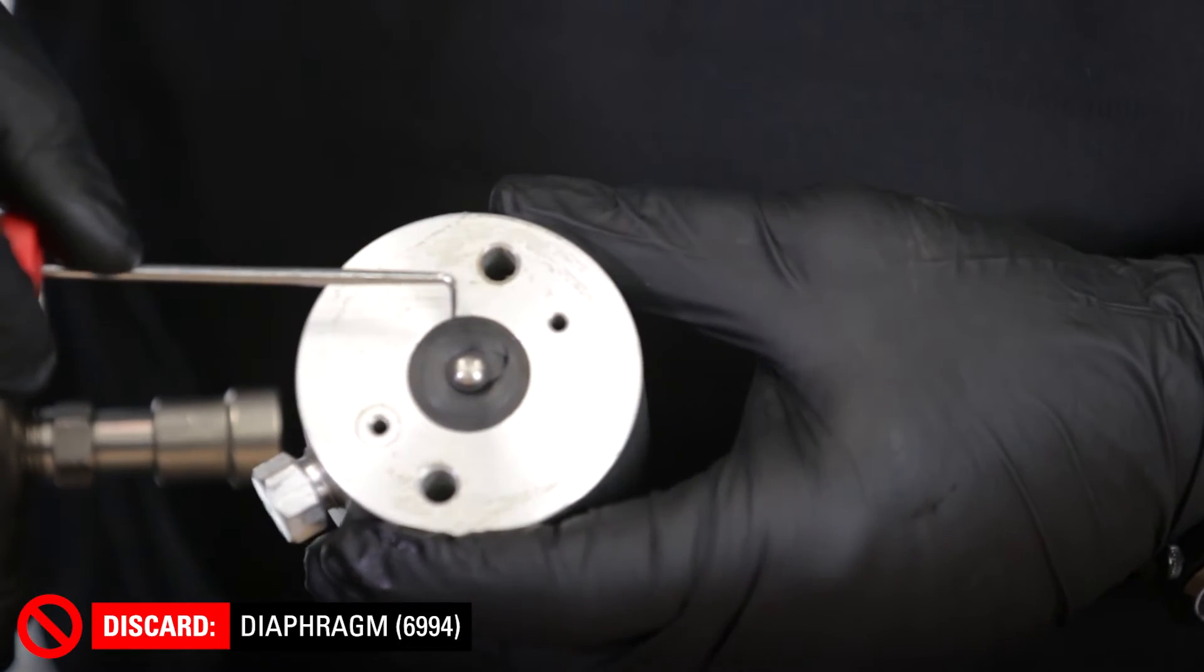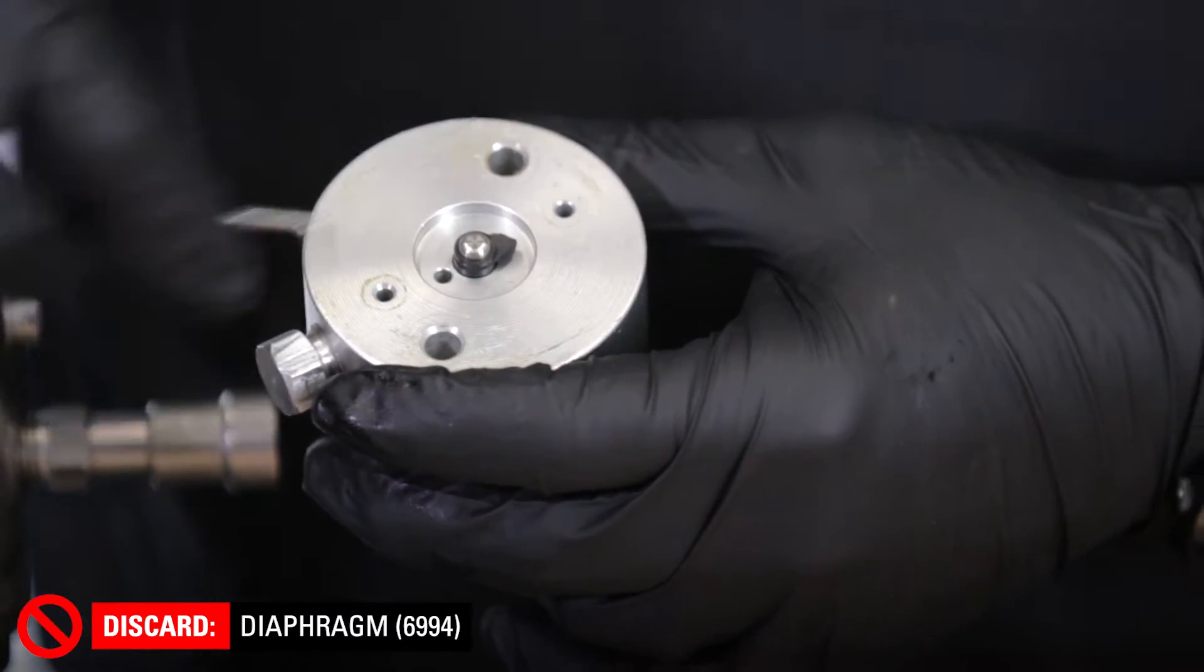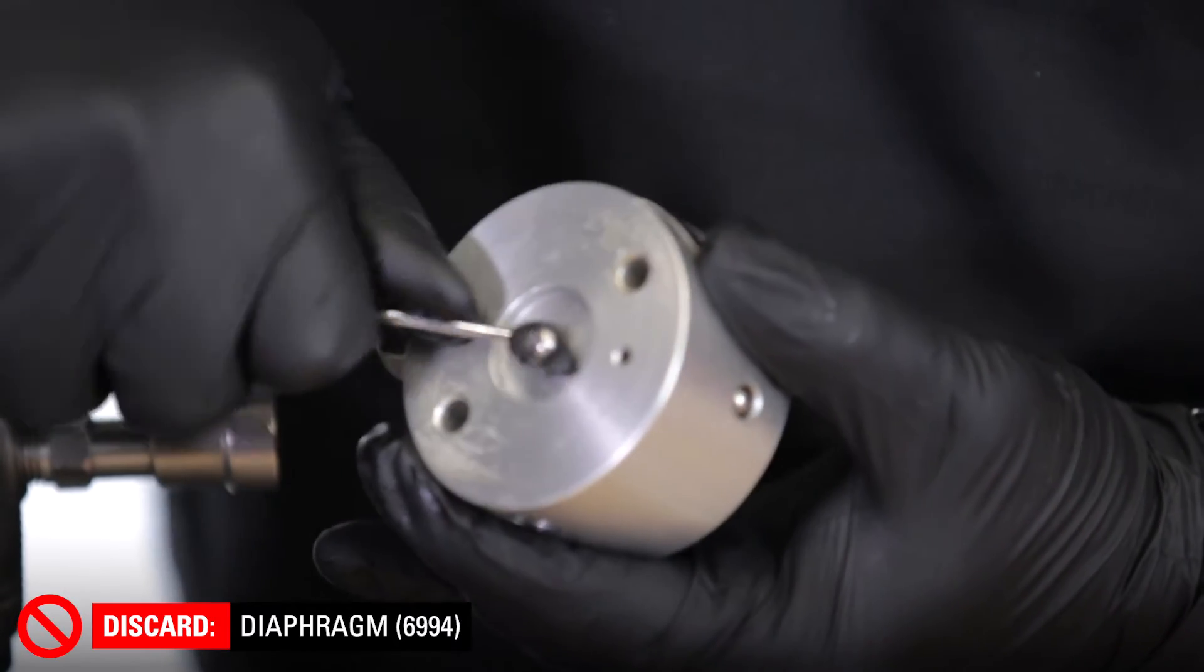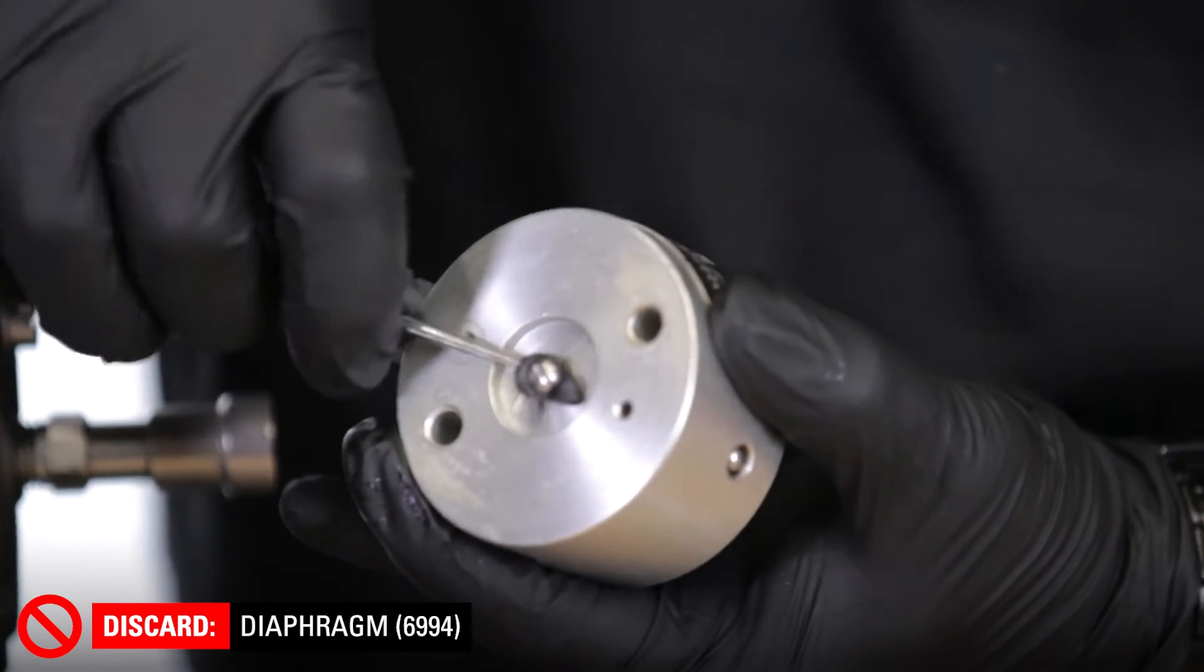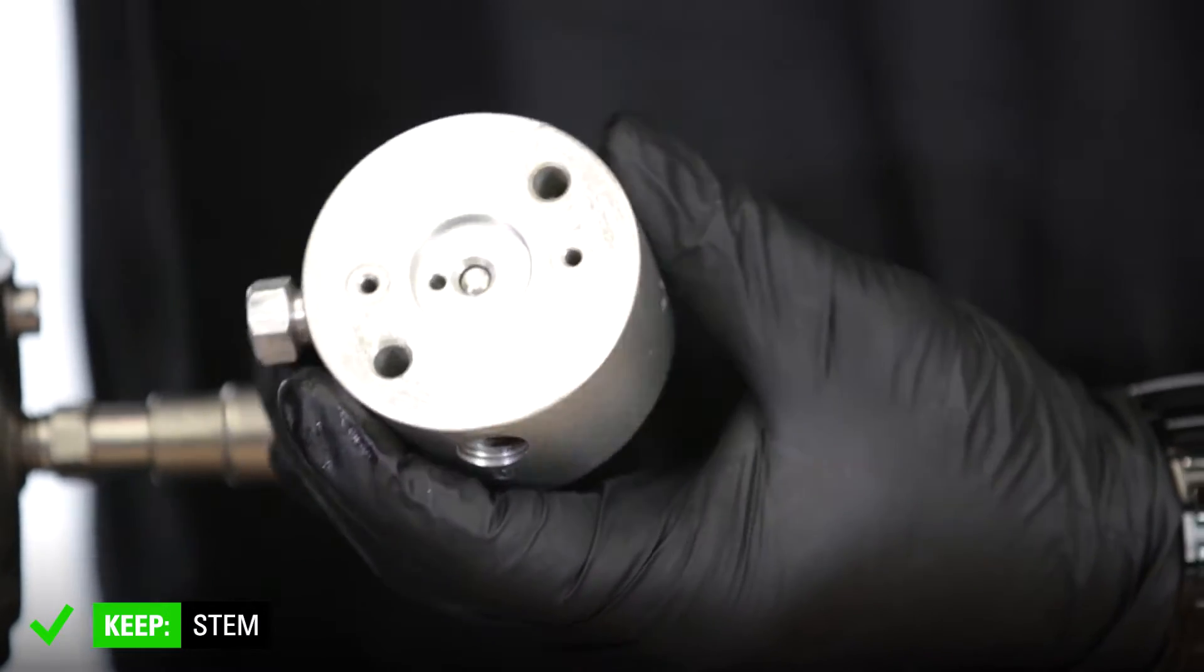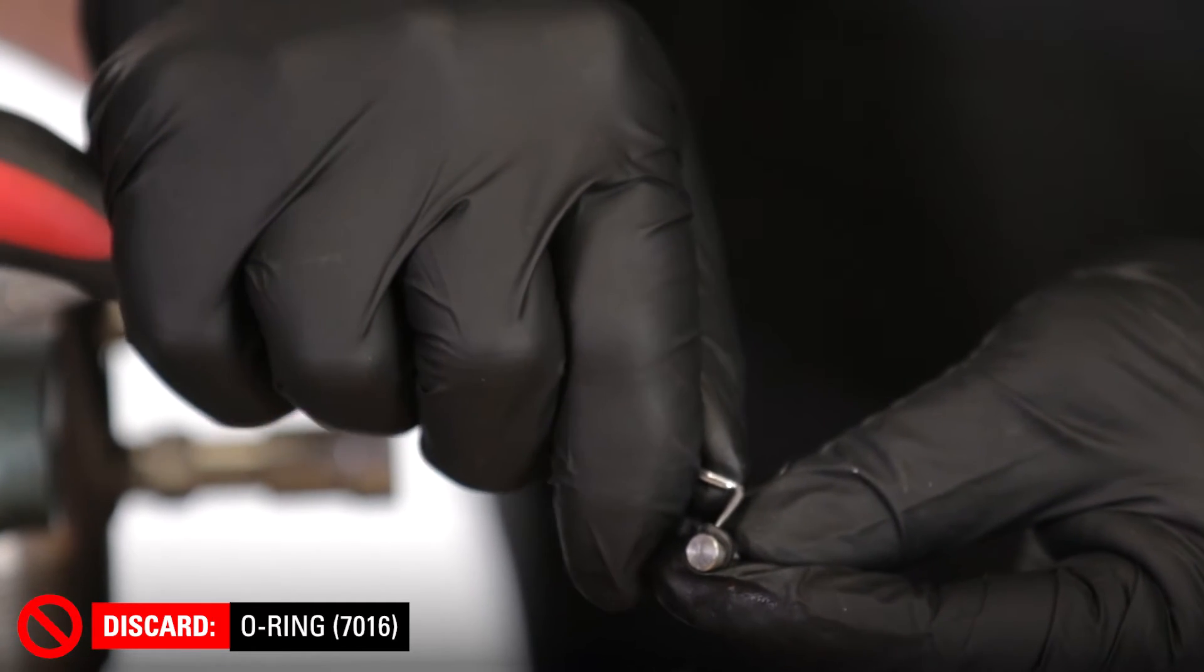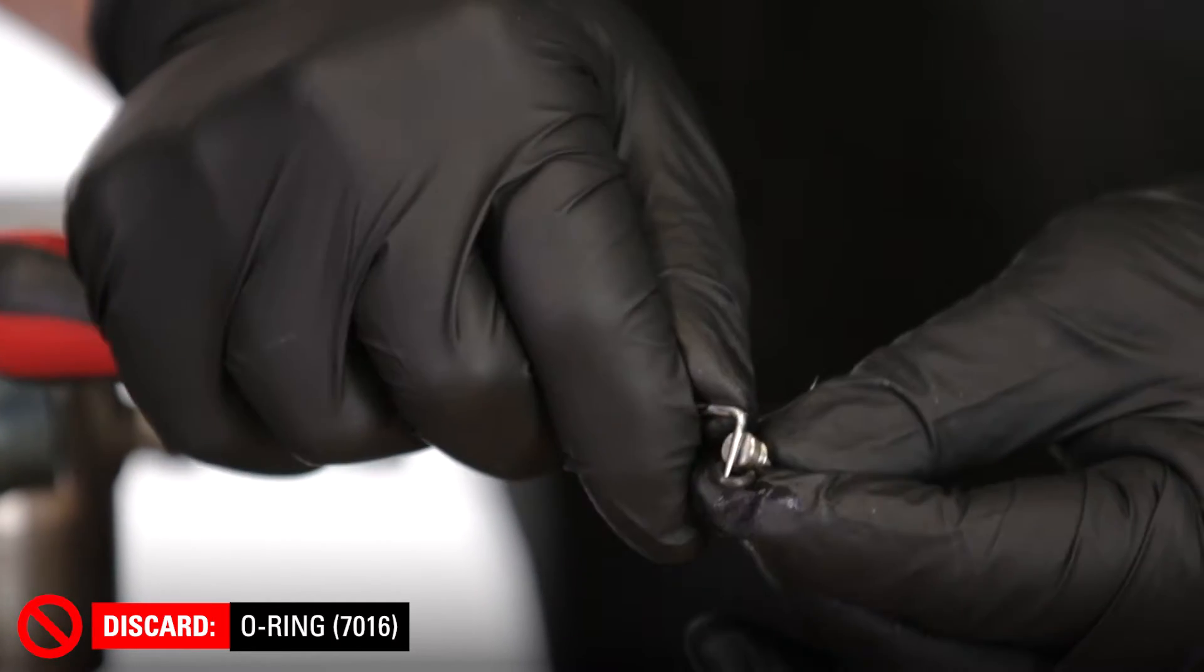Remove the diaphragm by using a pick to lift it. This piece will be discarded, so if you damage it during the process, that's okay. Be aware once the diaphragm is removed, the stem may fall out of the body. Keep the stem to reuse. Discard the O-ring from the stem. Then set the stem aside.